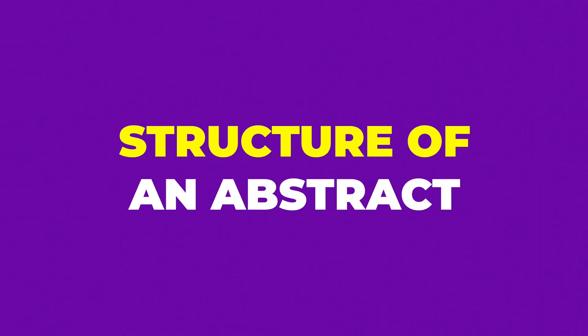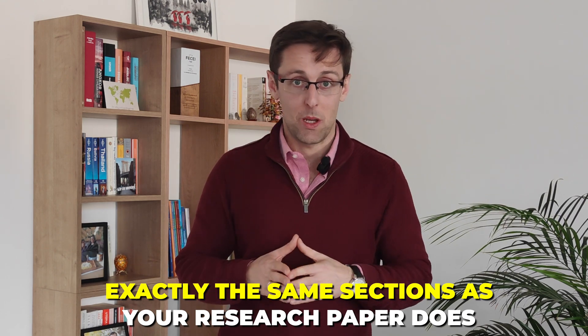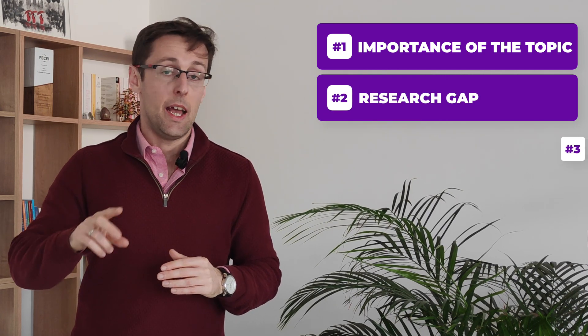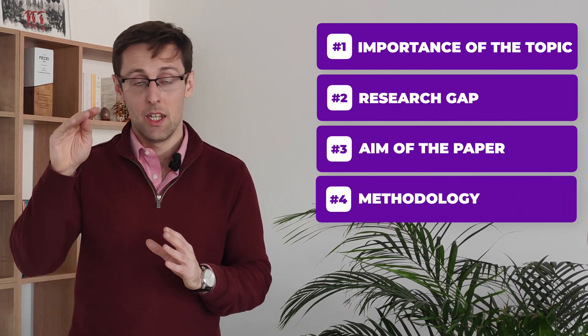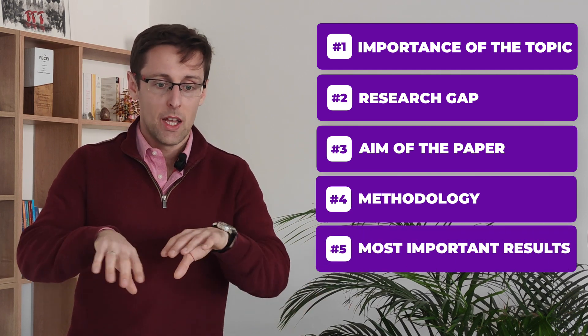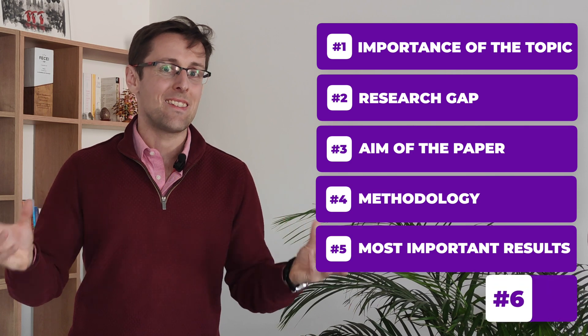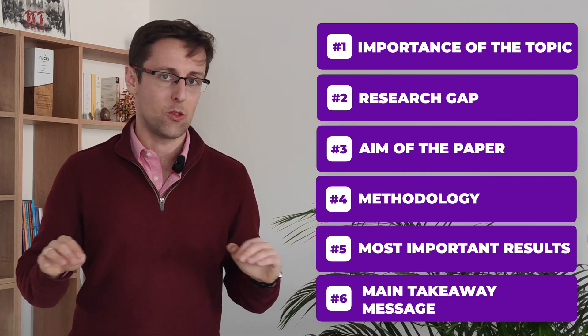Think of an abstract as a 200-word summary of your entire paper, with exactly the same sections as the paper itself. Typically around 200 words: the first sentence states the importance of the topic and very often the research gap; the second sentence presents the aim of the paper; the following two sentences present the methodology or materials and methods; the next approximately two sentences present the most important results; and the last sentence gives the main takeaway — the key result or key contribution of your study.